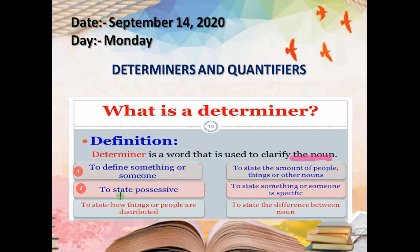To state possessive means ownership. To state how things or people are distributed — for example, 'every student will get the marks,' so 'every' shows distribution. To state the amount of people, things, or other nouns — like 'three persons are there,' 'four persons are there,' 'many people were there.' To state something or someone is specific — here we have to use the definite article 'the.' And to state the difference — whenever we want to differentiate, we also use a determiner.